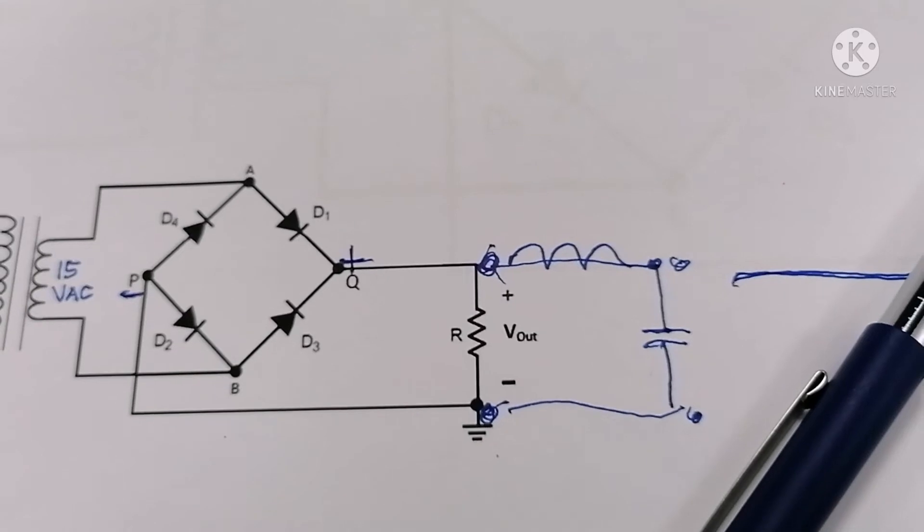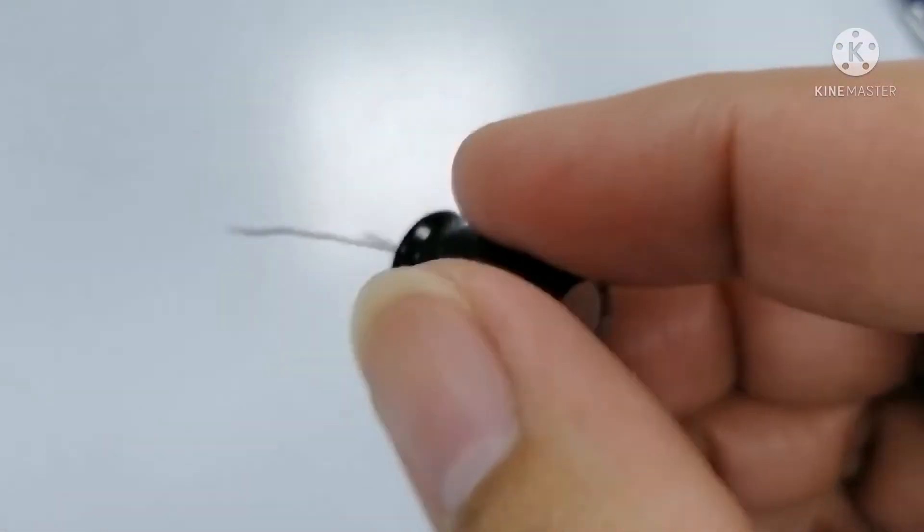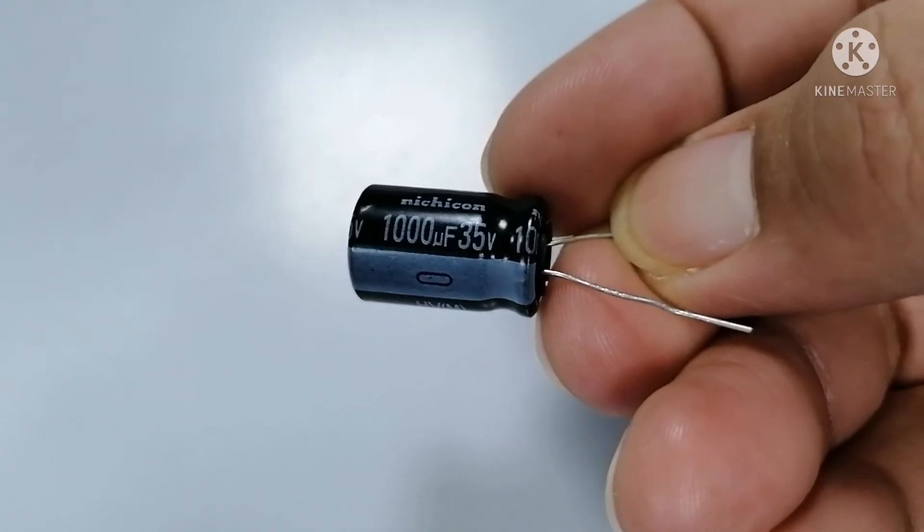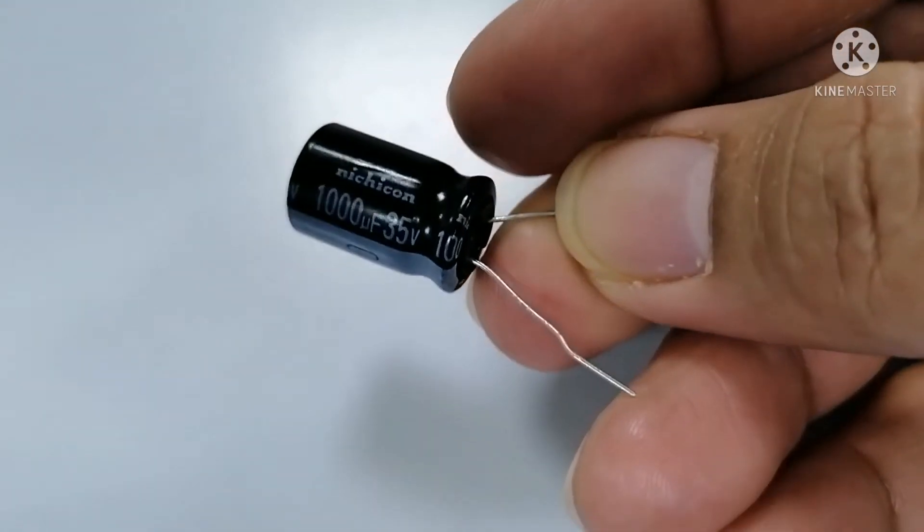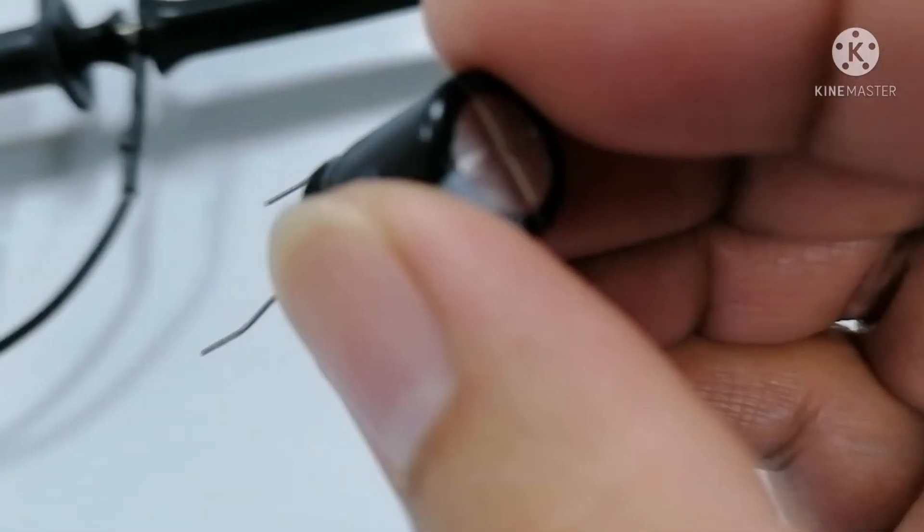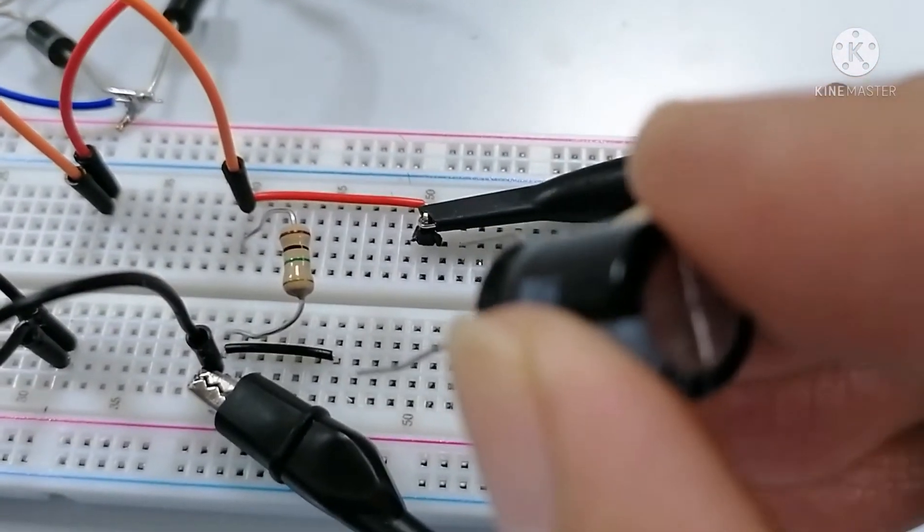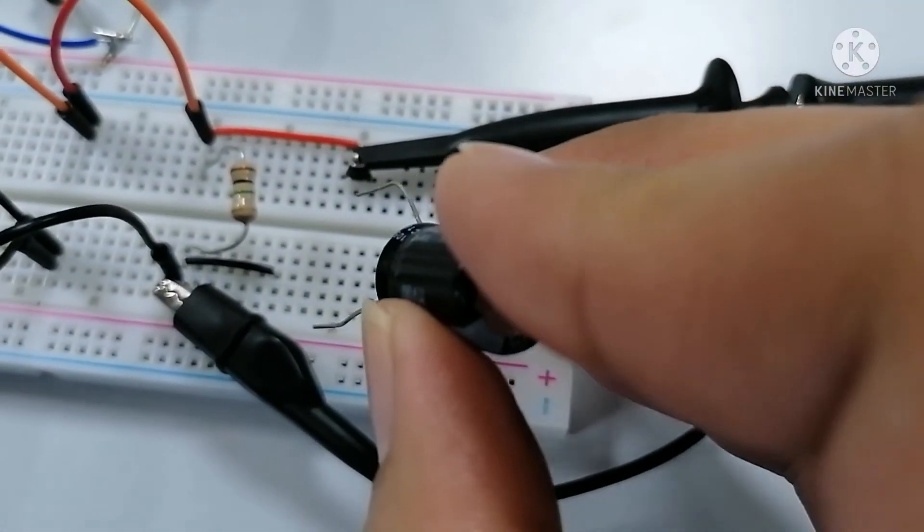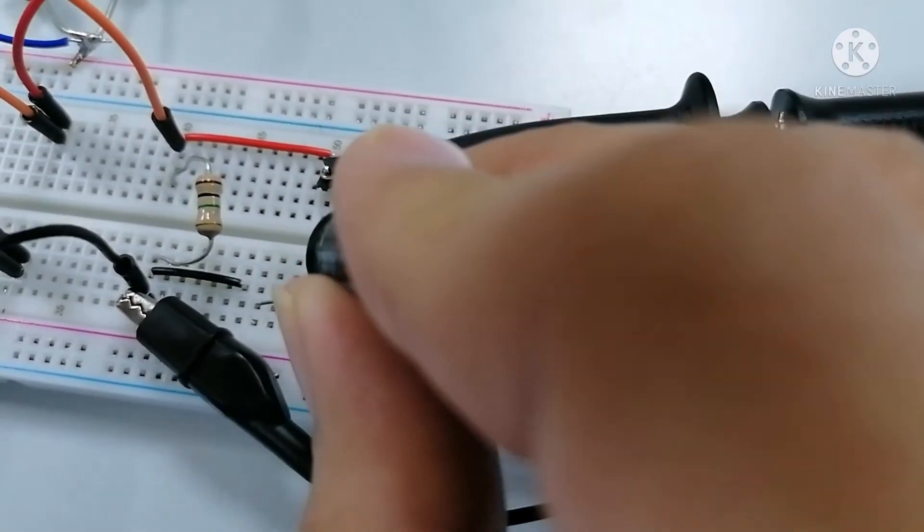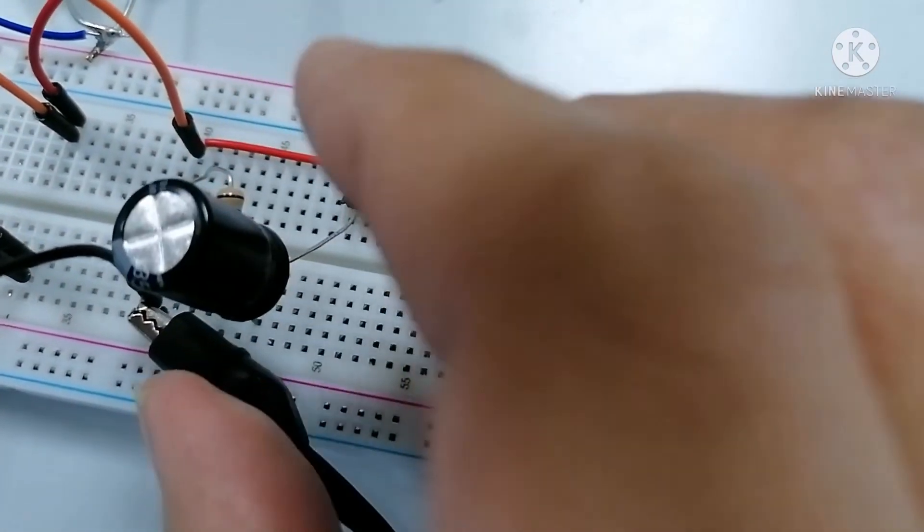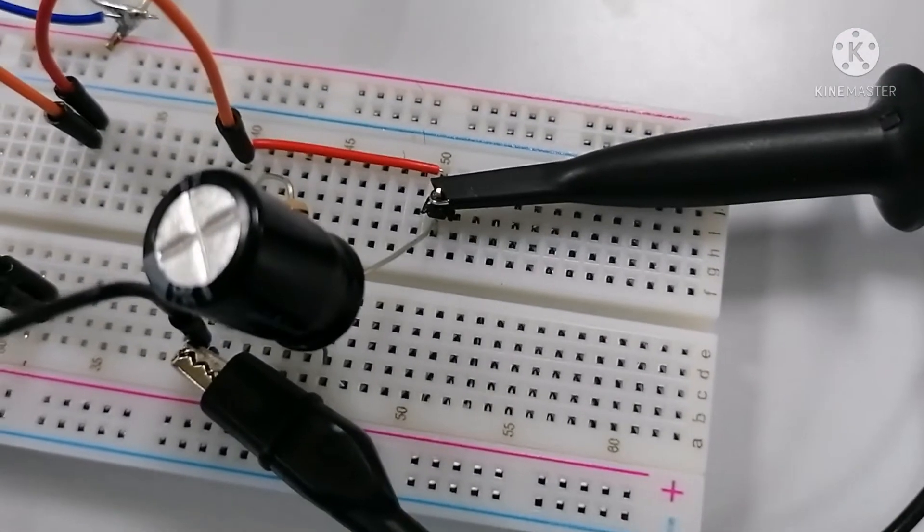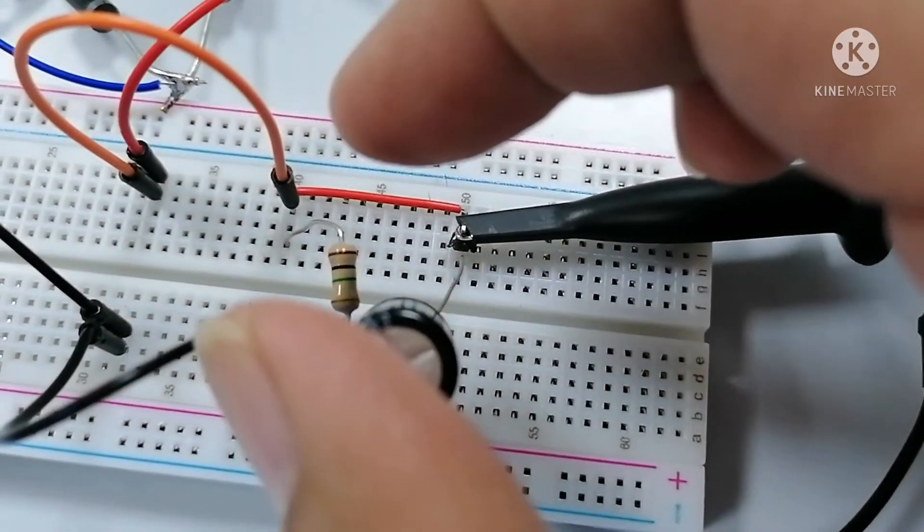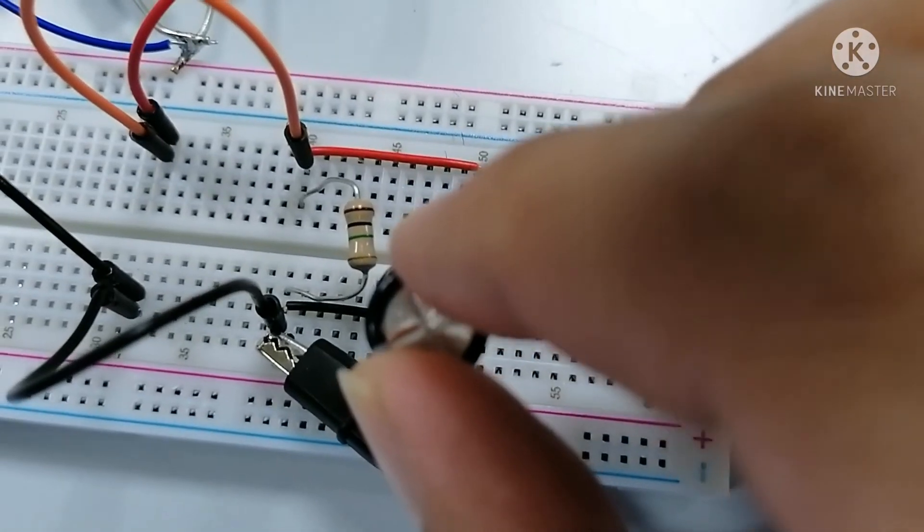This is my capacitor. The value is 1000 microfarad and 35 volts. So I will install this into the circuit like this. The positive of the capacitor is to the positive terminal like that. I put this in parallel of this resistor.